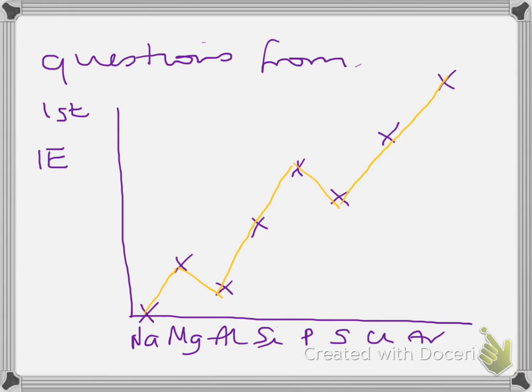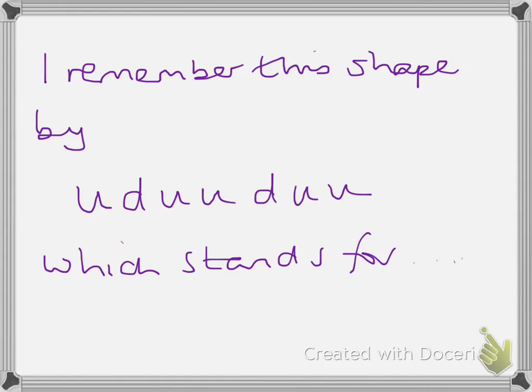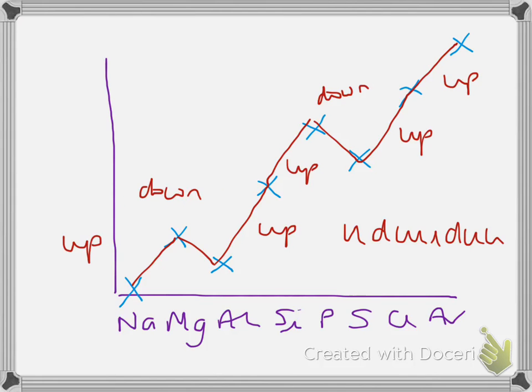The graph looks like this form. This one is for period 3. You get a similar shape for period 2. Anyway, to learn this one I have a silly little way of remembering it. So I remember it by saying 'you do do' which basically stands for you start off with sodium at the bottom then you go up, down, up, up, down, up, up. So 'you do do'.